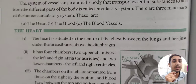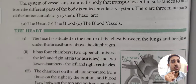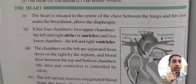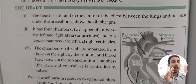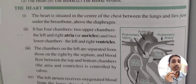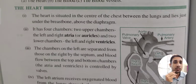There are three things we need for the circulatory system: the heart, the blood, and blood vessels. The heart is situated in the center of the chest between the lungs, just under the breastbone, above the diaphragm.